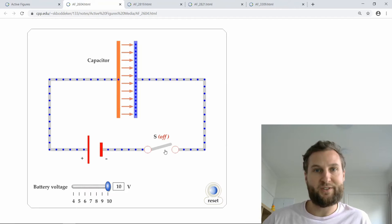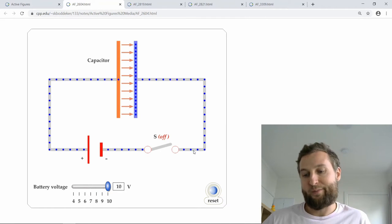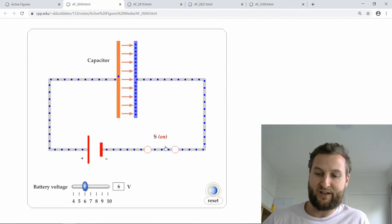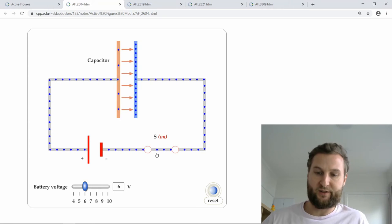But electrons themselves, they drift or they kind of bump along in this anti-clockwise direction. And for electrons themselves, they move very slowly.